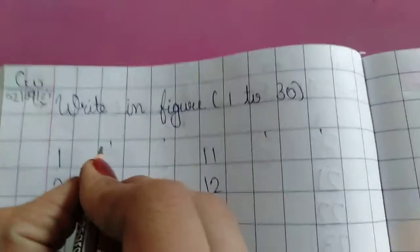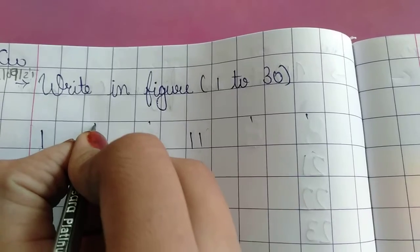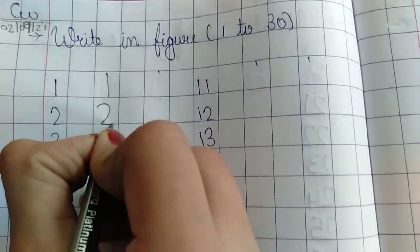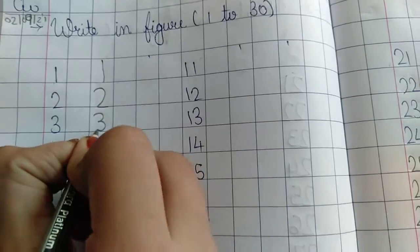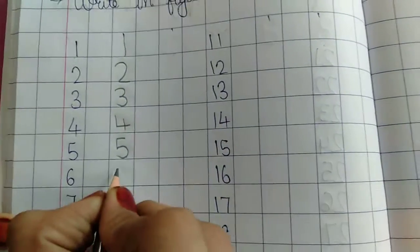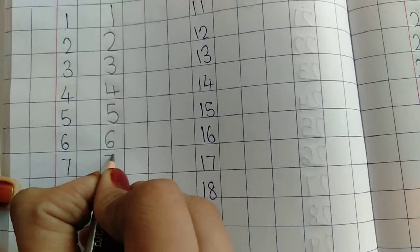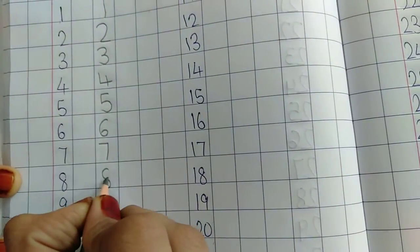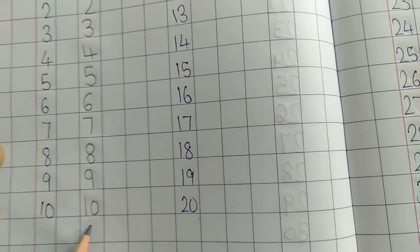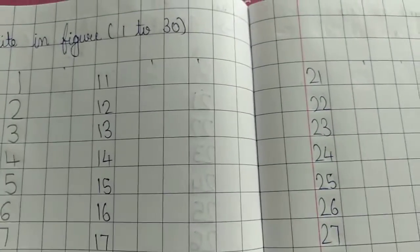First, we will write 1 to 10. Students, you will write: 1, 2, 3, 4, 5, 6, 7, 8, 9, 1, 0, 10. 1 to 10.